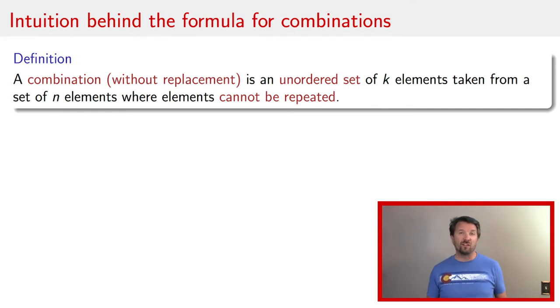So as a reminder, a combination without replacement is an unordered set of k elements taken from a set of n elements where the elements cannot be repeated. That's the without replacement piece. And the combination refers to the fact that this is an unordered set.